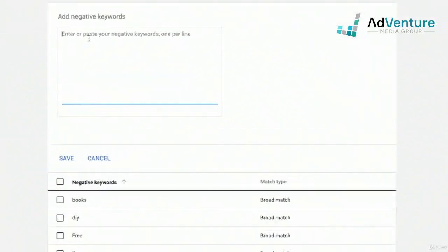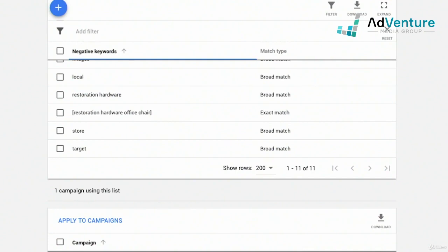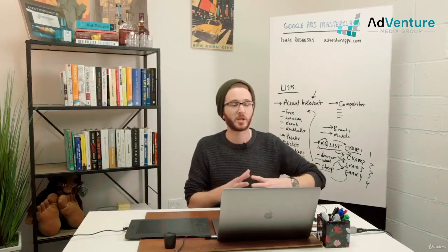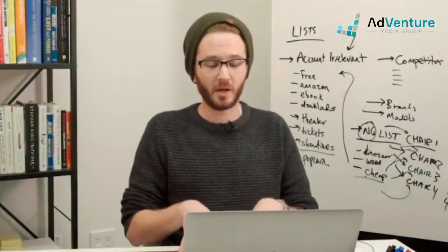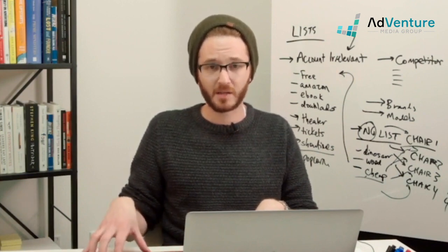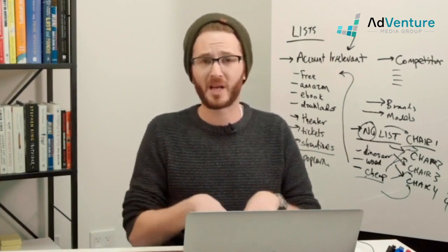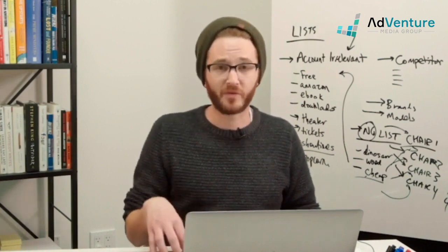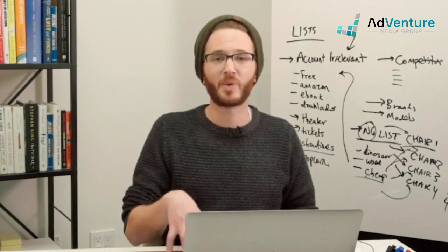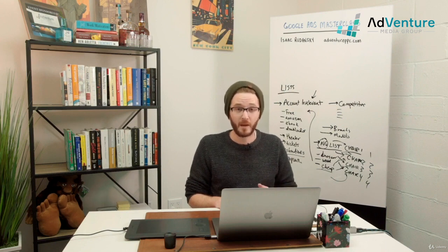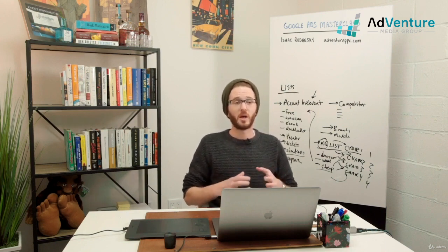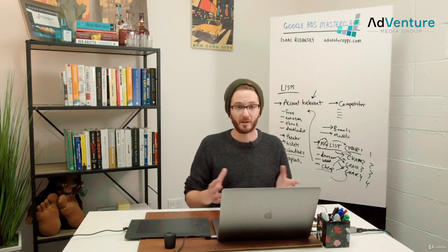You can add negative keywords directly from the list view by clicking the blue plus sign — for example, adding 'Costco' and clicking save. It's a really flexible way to manage negative keywords. As your account scales with potentially 50 search campaigns, each with 5 to 10 ad groups, using campaign-level negative keyword lists, account irrelevant lists, and ad group negative keywords for sculpting is the best approach. Try to avoid individual campaign-level negative keywords as much as possible, since you can typically use negative keyword lists instead for a more efficient, organized system.